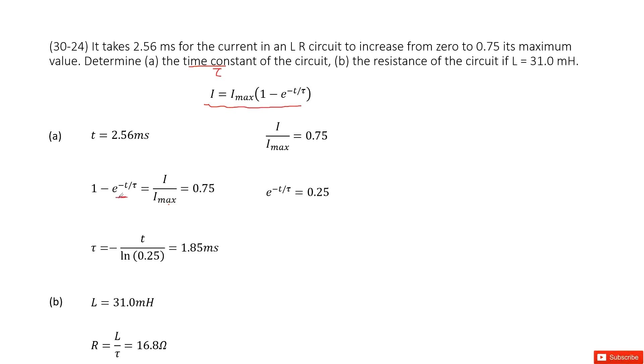Then we can find that e^(-t/tau) equals 1 minus 0.75, which is 0.25.